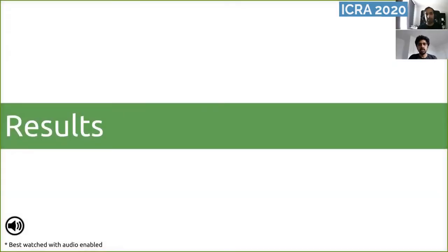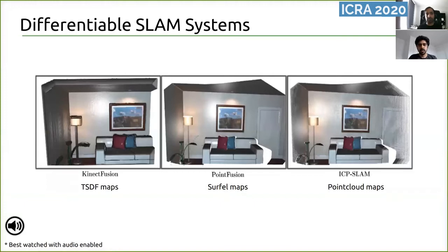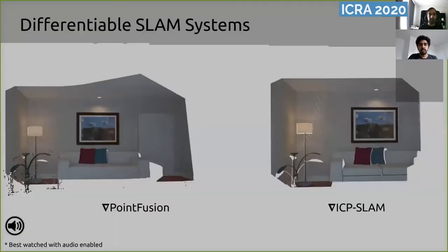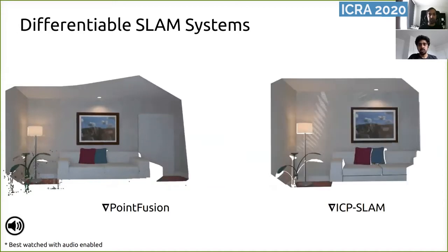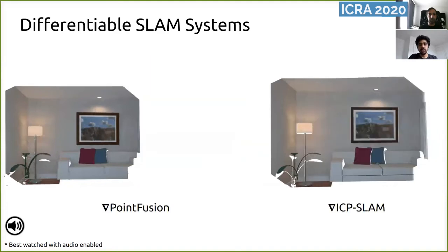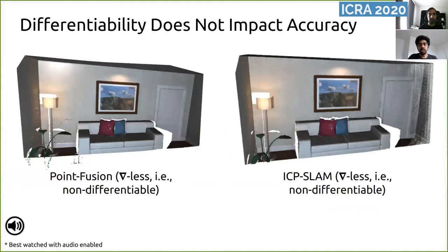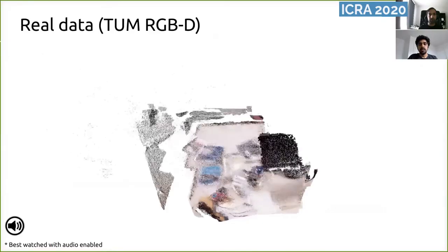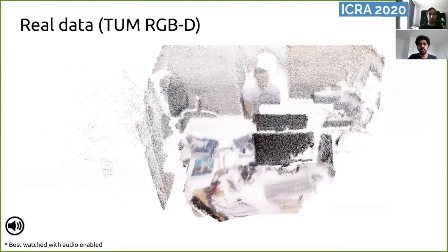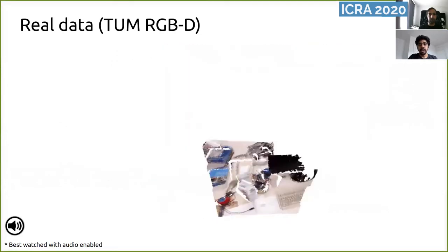Now let's look at some of the results, where all the above components are grouped together to realize an end-to-end differentiable SLAM system. We take three classical SLAM systems, each operating on a different kind of map representation, and implement differentiable versions of these algorithms in the Grad SLAM framework. The map reconstructions shown here are from the ICL-NUIM dataset. These differentiable SLAM systems run fully on the GPU and are capable of computing gradients with respect to any intermediate or input variable. Furthermore, this differentiability comes almost for free, with a negligible impact on accuracy. We also evaluated Grad SLAM on real sequences from the TUM-RGBD benchmark, where it fares comparably to the non-differentiable counterparts.